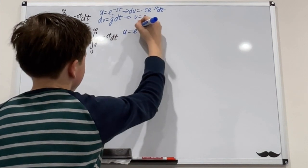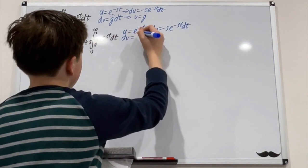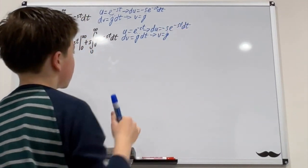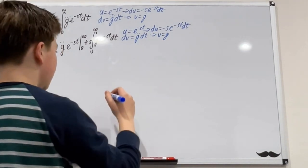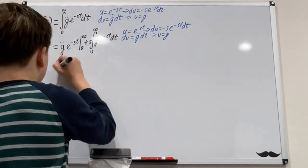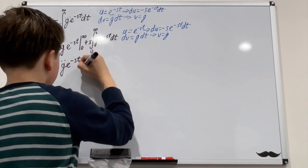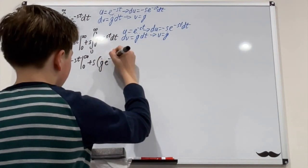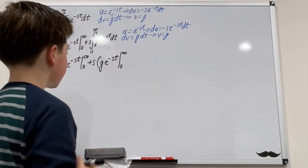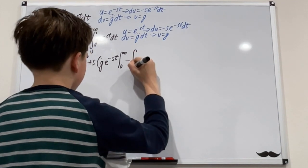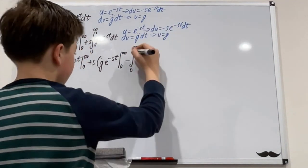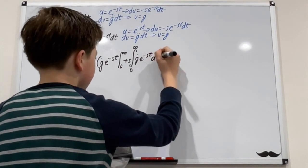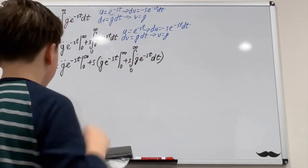Again our u equals e to the negative st, dv equals g-double-dot dt, and so v equals g-dot. So again we're bringing this down over and over, and eventually we'll just be integrating g of t times something. Now we'll get g-double-dot·e to the negative st from zero to infinity, plus s times u·v, so g-dot times e to the negative st from zero to infinity, minus the integral from zero to infinity of v·du — that's g-dot times negative s. Again we bring the negative s out and we're left with e to the negative st · g-dot times e to the negative st.